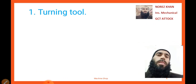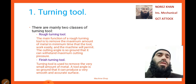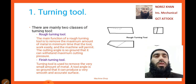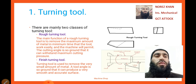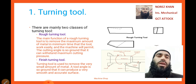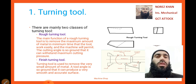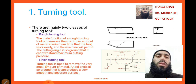We start with the turning tool. A turning tool is a tool which is used for a turning operation — for making a uniform diameter of a job at steps or at different taper shapes. There are mainly two classes of turning tool: rough turning tools and finished turning tools.